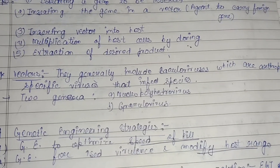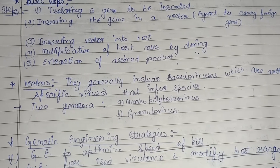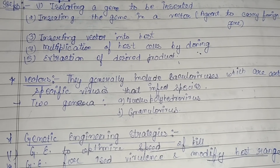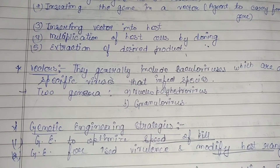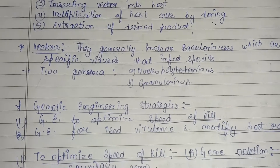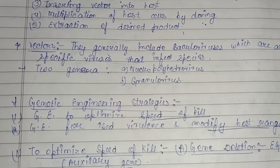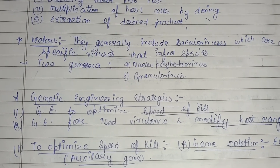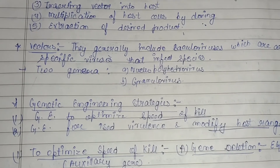Vectors generally include baculoviruses, which are arthropod-specific viruses that infect insect species. Two genera of baculoviruses are used as vectors: nucleopolyhedrovirus and granulovirus. Genetic engineering strategies for bacteria include: first, genetic engineering to optimize the speed of kill — how fast it can kill the plant pathogen; and second, genetic engineering for increased virulence and modified host range so it can act on a wide range of hosts, not just a specific one.